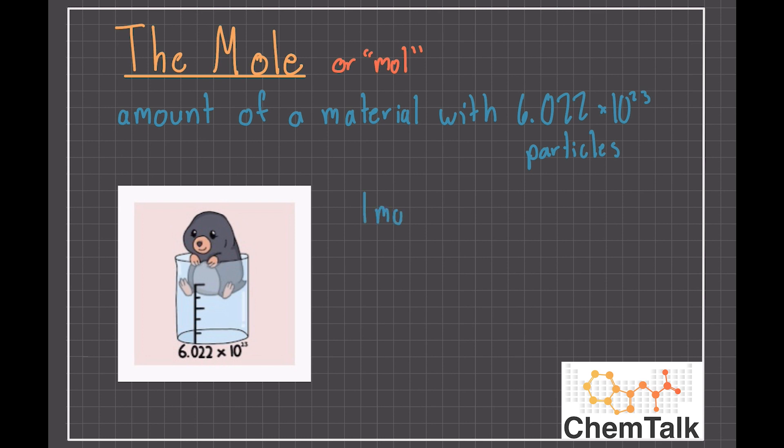A singular mole is 6.022 times 10 to the 23rd particles. We often refer to things as a mole of atoms, a mole of elements, or a mole of a molecule.